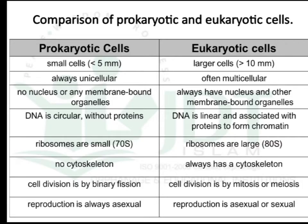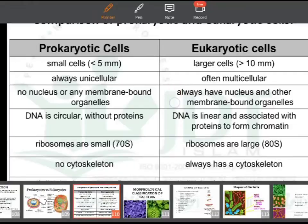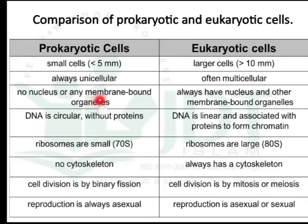Now for the main differences: prokaryotic cells are the smallest cells and eukaryotic cells are the largest. Prokaryotes are always unicellular but eukaryotes are often multicellular. There is no nucleus or any membrane-bound organelles in prokaryotes, whereas eukaryotes always have a nucleus and other membrane-bound organelles.